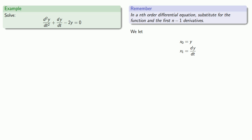We do, however, need the derivatives of x0 and of x1. Well, x0 prime is just the derivative of y with respect to t, and x1 prime is the second derivative of y with respect to t.